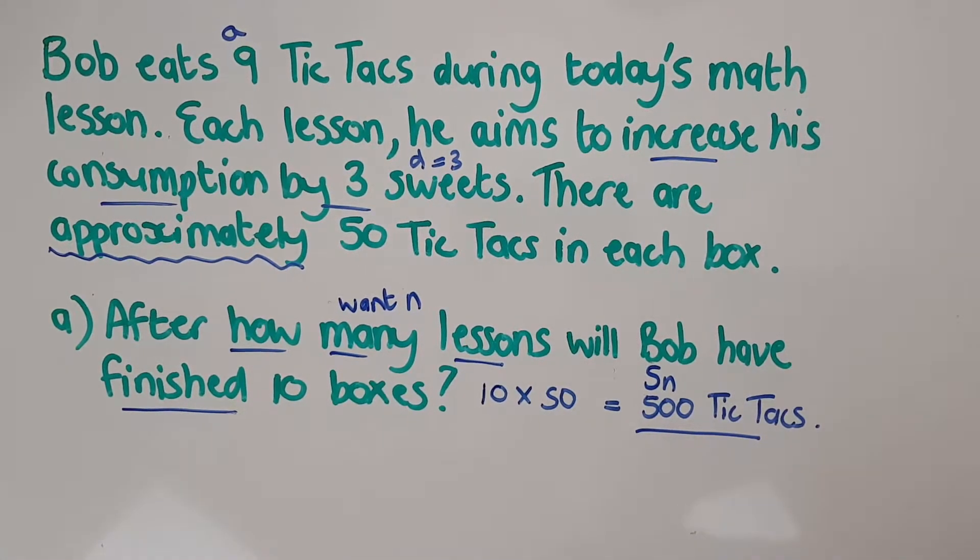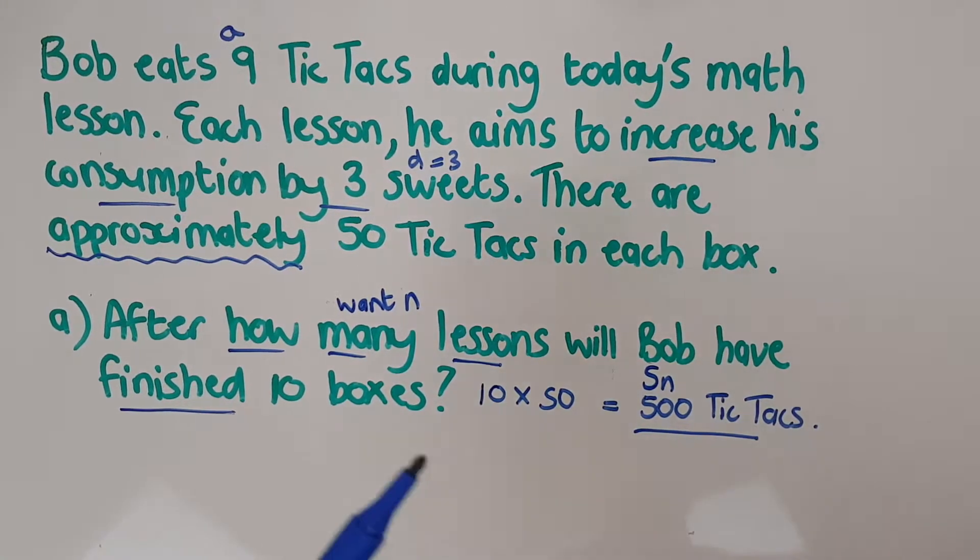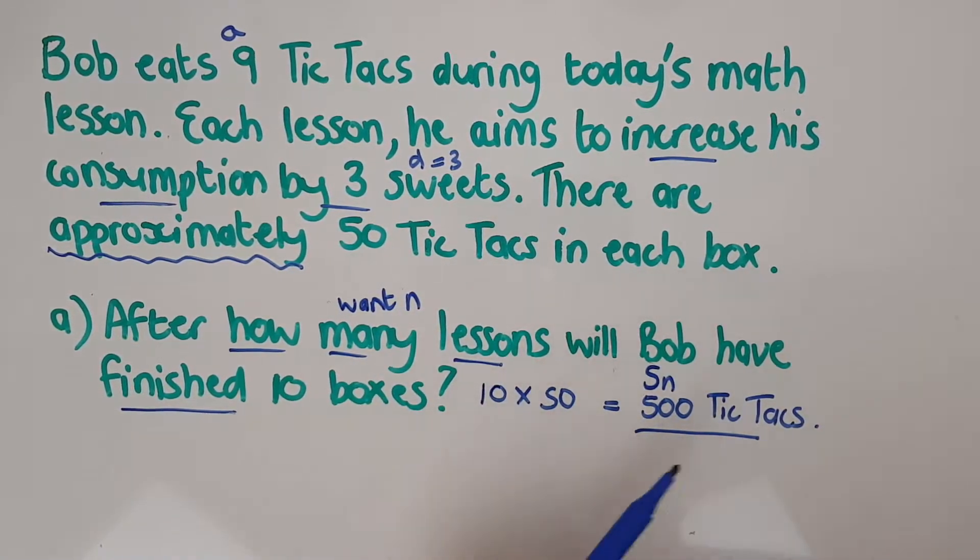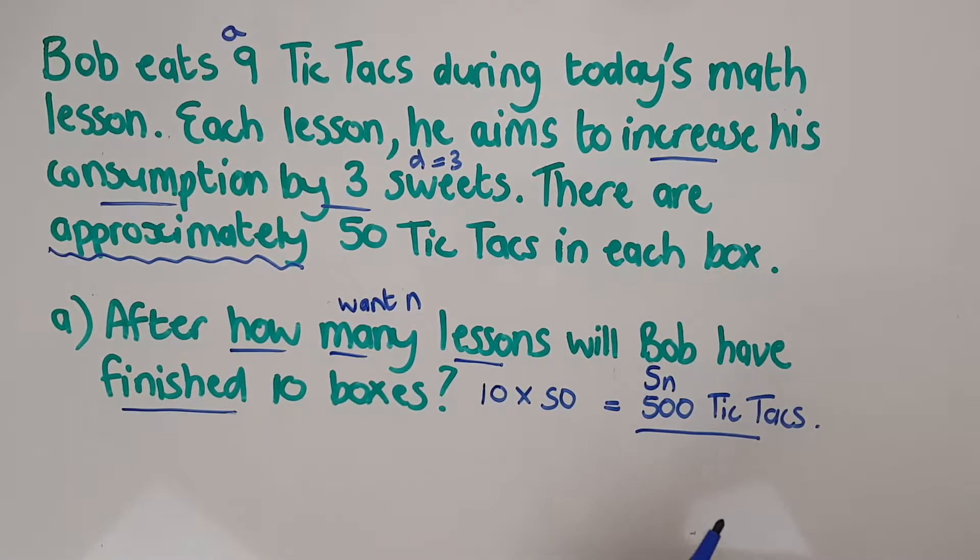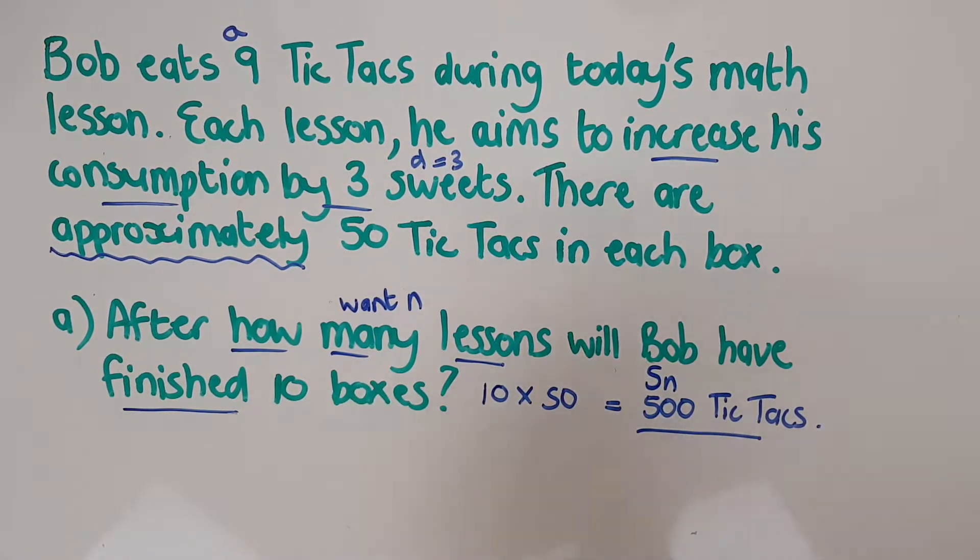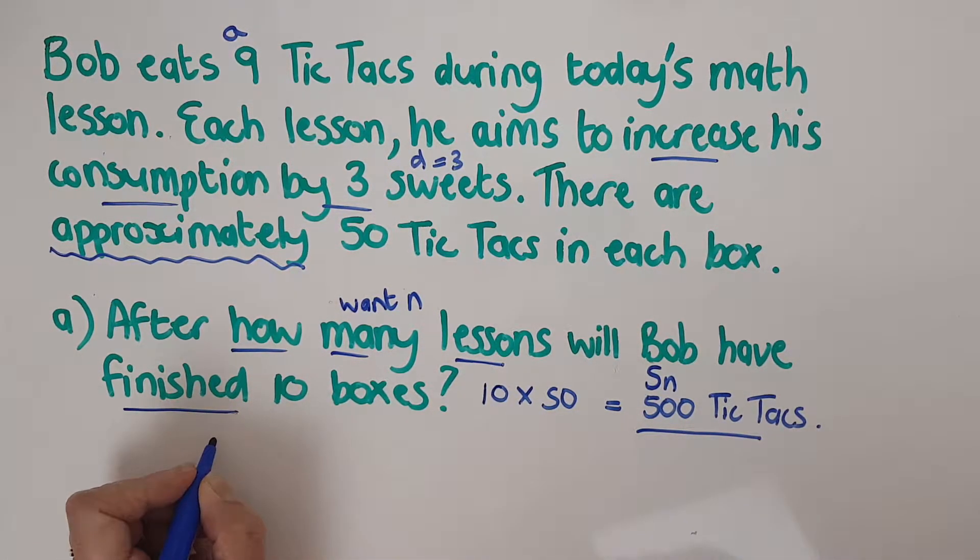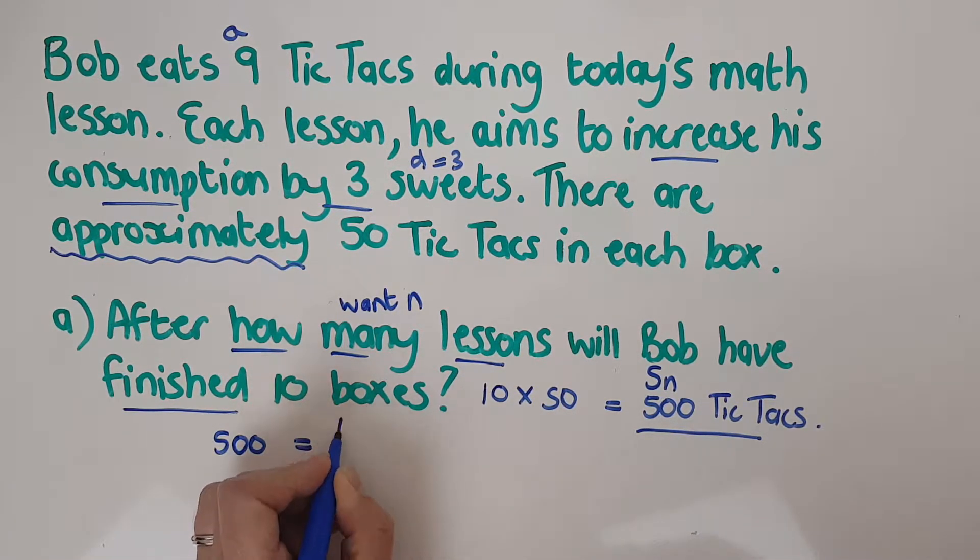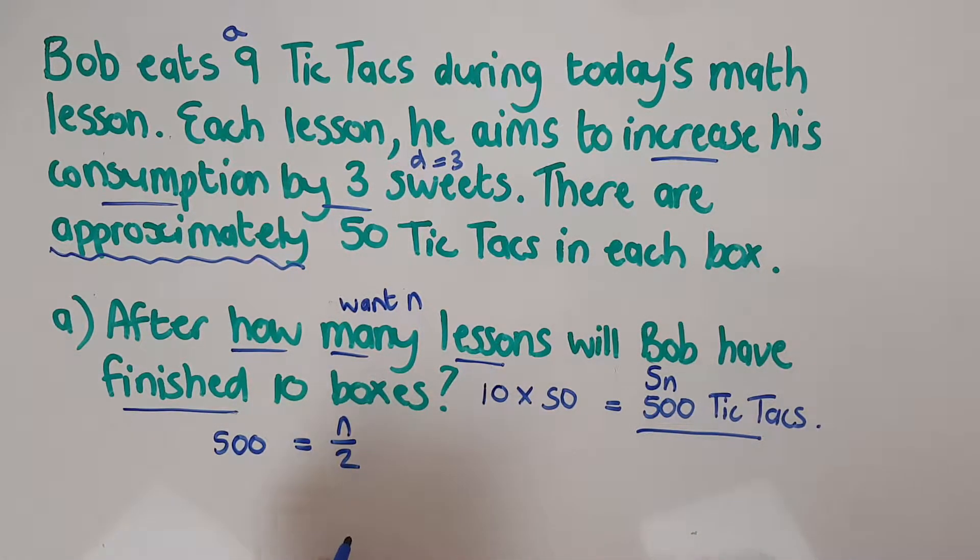There's no question as to which formula I'm using. Because I've been given Sn, I have to use the Sn formula. And I want n, I've got everything else. So I'm going to sub directly in. It's Sn equals—but Sn I got given. You're welcome to write the formula out, I'm not going to. Five hundred is my Sn. That equals the n over two, the thing I don't have.